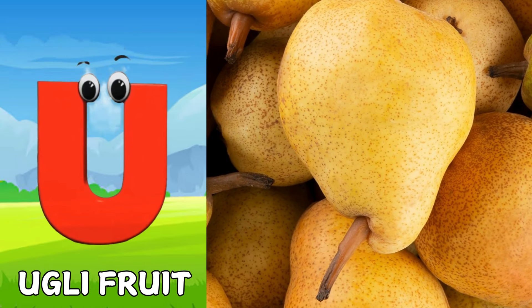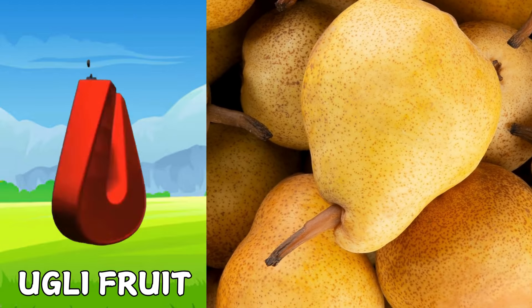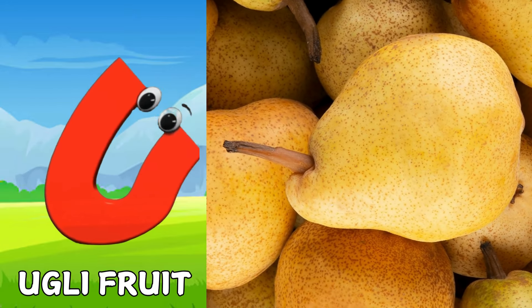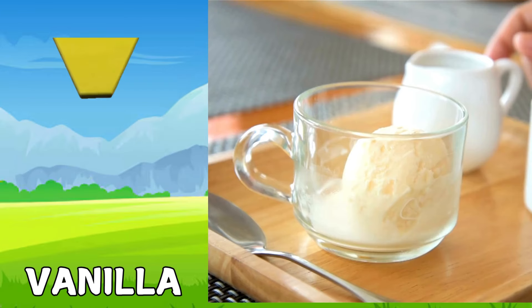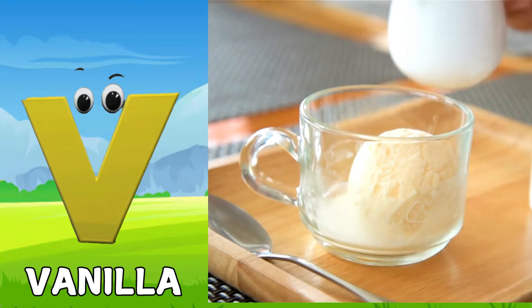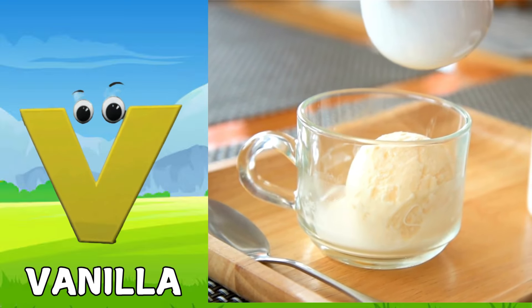U is for ugly fruit. U, U, ugly fruit. V is for vanilla. V, V, vanilla.